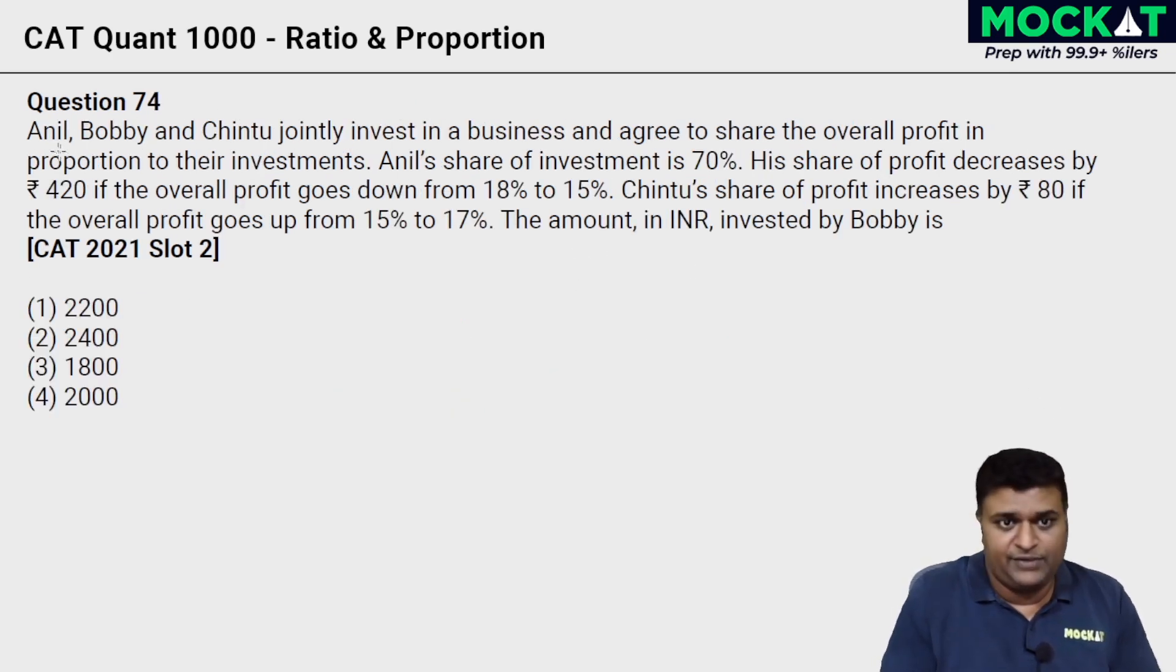On to question 74. Anil, Bobby and Chintu, we'll just take it as A, B and C. Jointly invest in a business and agree to share their overall profit in proportion to their investments. Ratio and partnership, the partnership part. Now Anil's share of investment is 70%. His share of profit decreases by 420 if the overall profit goes down from 18 to 15%. So a 3% drop in the profits, his share is dropping by 420.